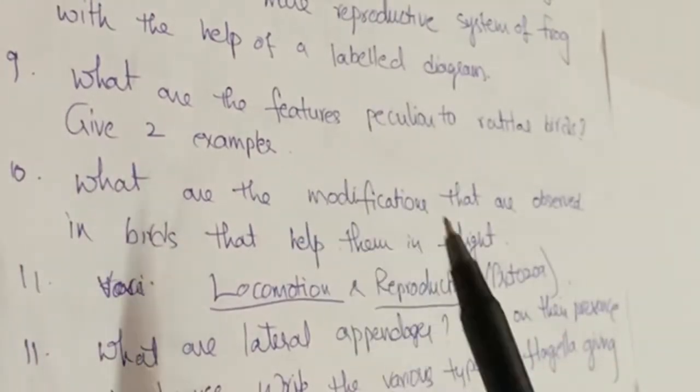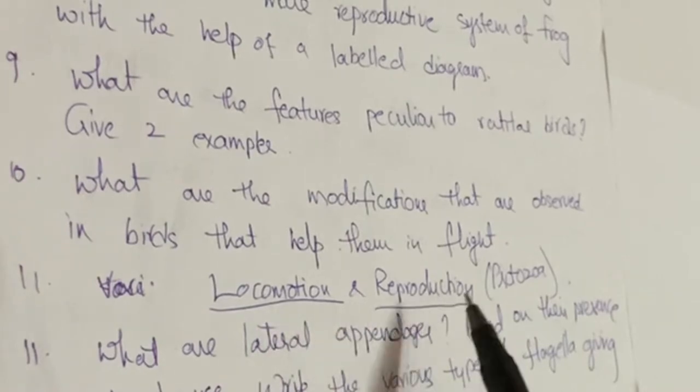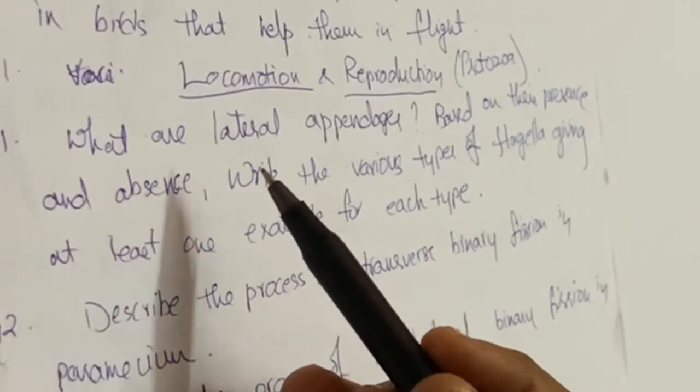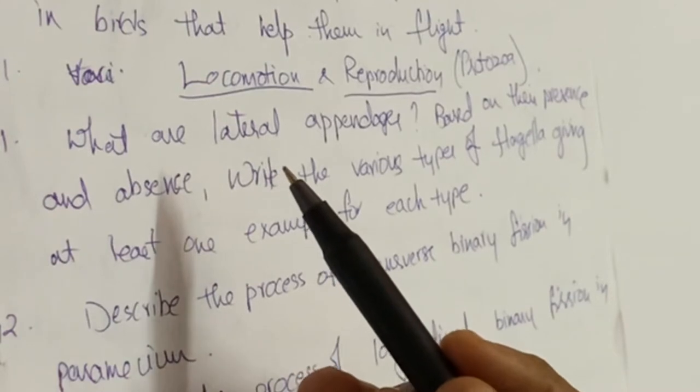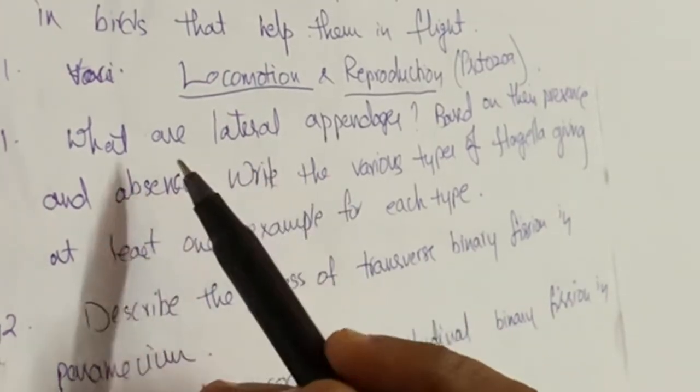From the chapter Locomotion and Reproduction, two four-mark questions will come. One is a diagram, another one is the written part question.